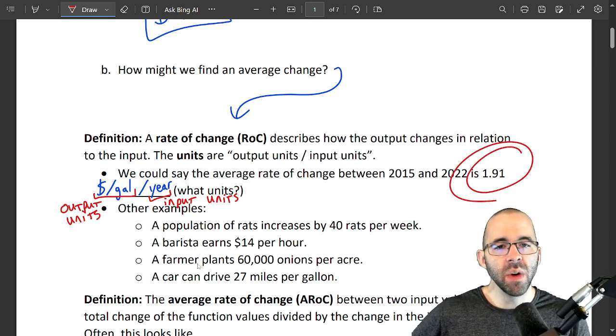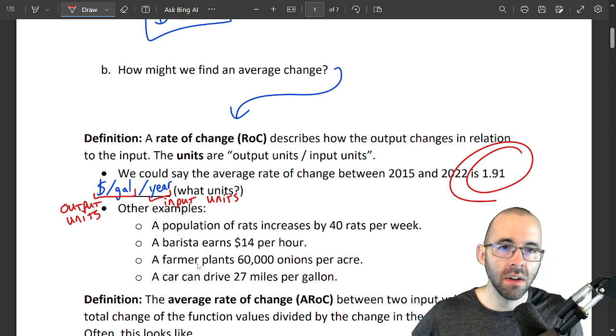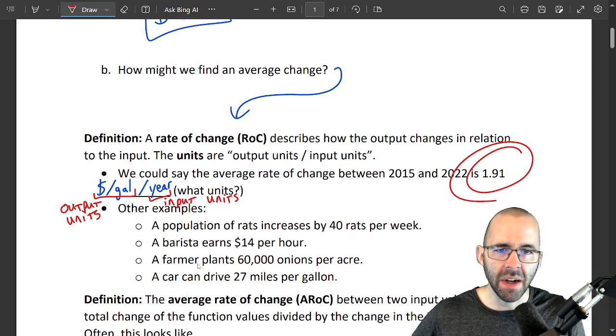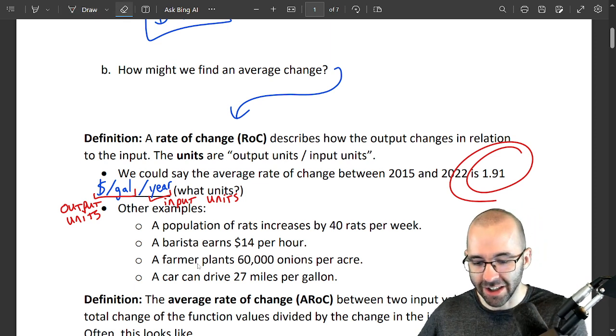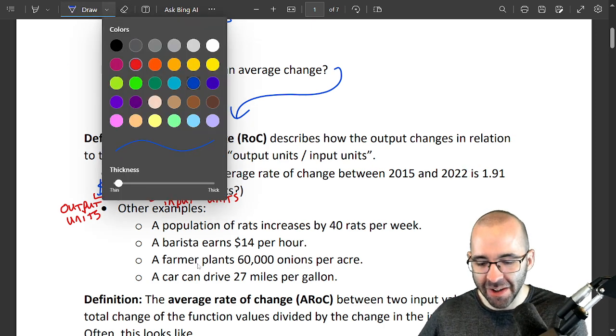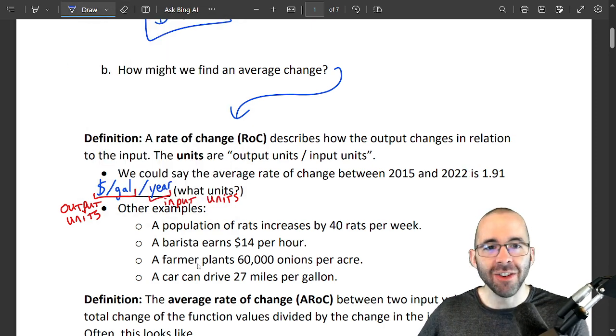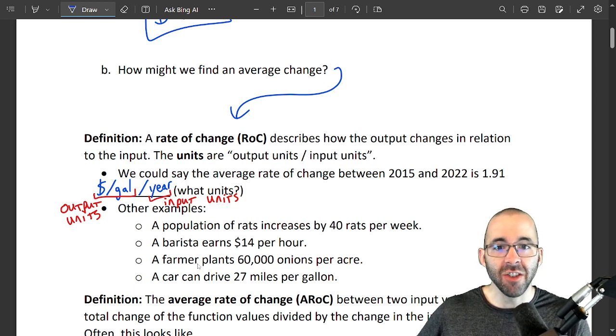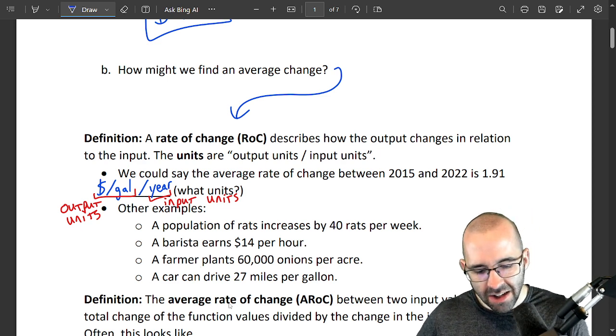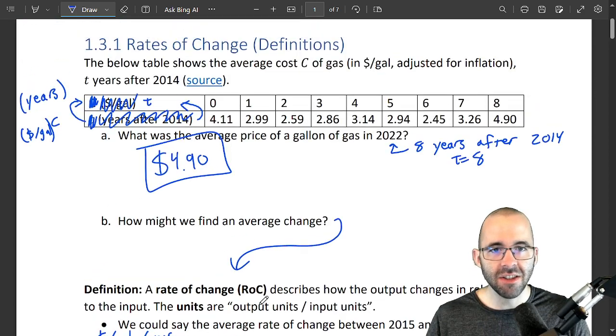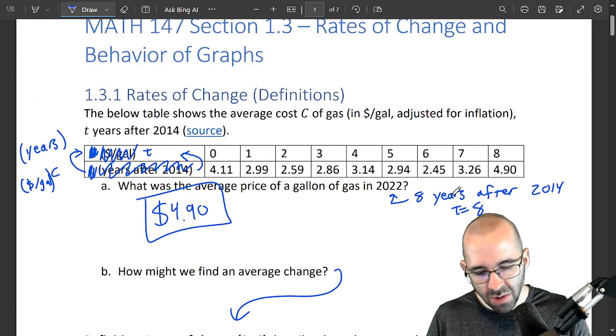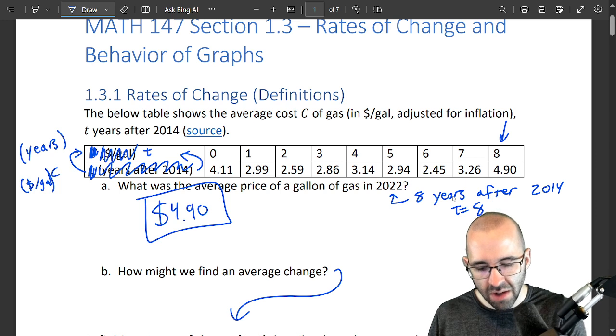This says that between 2015 and 2022, I'm actually starting to doubt my math. I'm really doubting my math. This is an excellent teaching opportunity. This says that on average the cost of gas increased by a dollar and 91 cents per gallon every year. And that's why I think this number is maybe not right, because we'll get into the definition of what this is afterwards, but 2022 is here, 2015 is here.